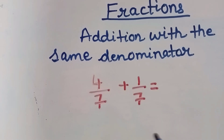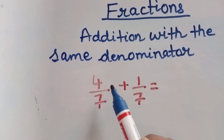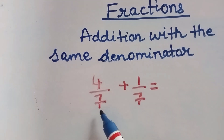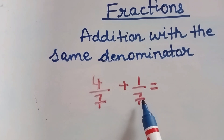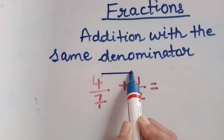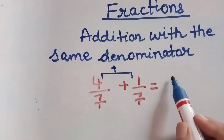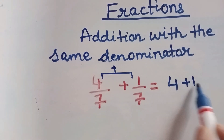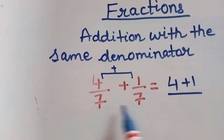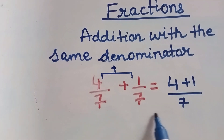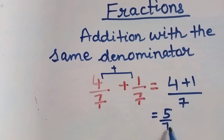Let us take one more example. Here we have to add 4 by 7 plus 1 by 7. Here also the denominator is same, that is 7. So we will add the two numerators here — 4 plus 1 — and the denominator is 7. So the answer is 5 by 7.